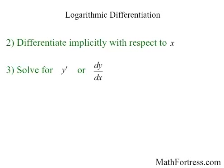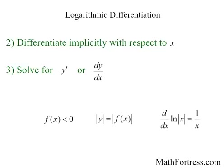Be on the lookout for functions where the range of the function is less than zero for some values of x. Recall that the natural logarithm function is not defined for values of x less than zero. We can fix this by taking the absolute value of both sides and using the derivative of the natural logarithm of the absolute value of x to compute the derivative.